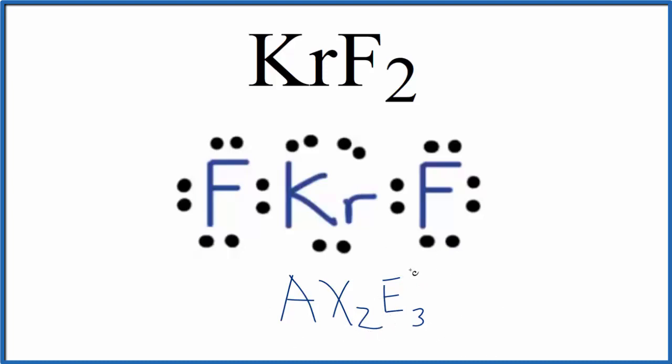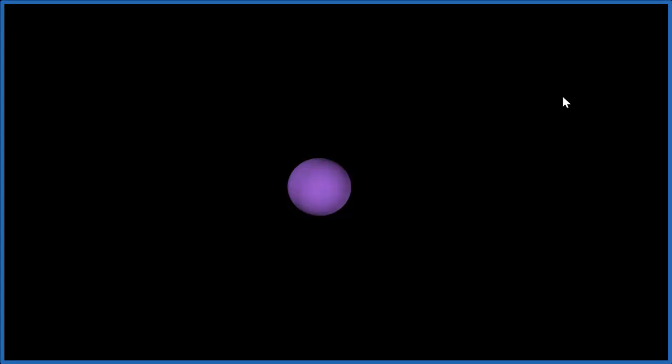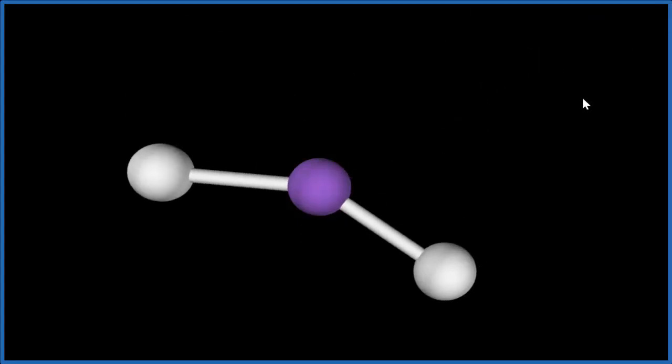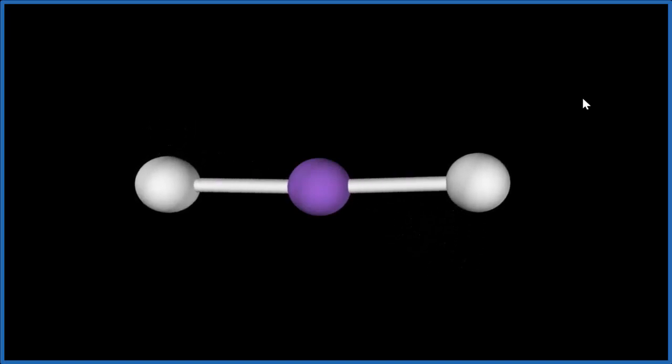Let's visualize this for a second and then talk about whether KrF2 is a polar or nonpolar molecule. So the krypton, that's the central atom. That'll be the purple here. Let's add two fluorine atoms. One, two. And they'd spread out to be as far away as they can be from each other.